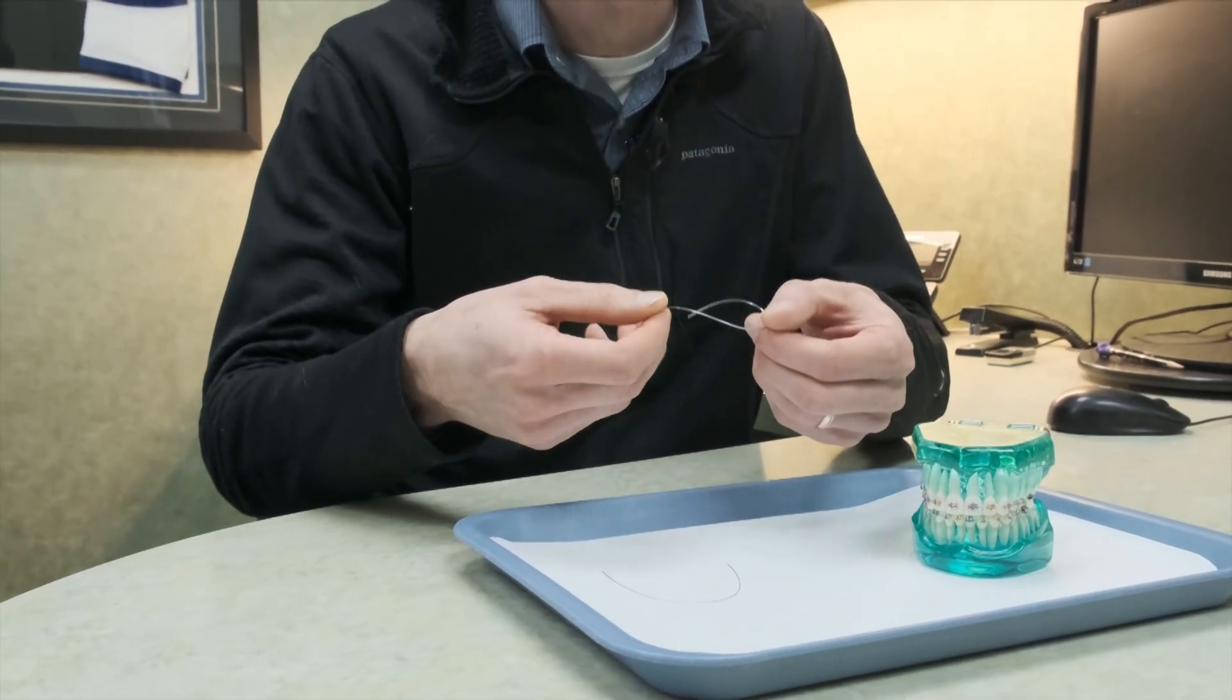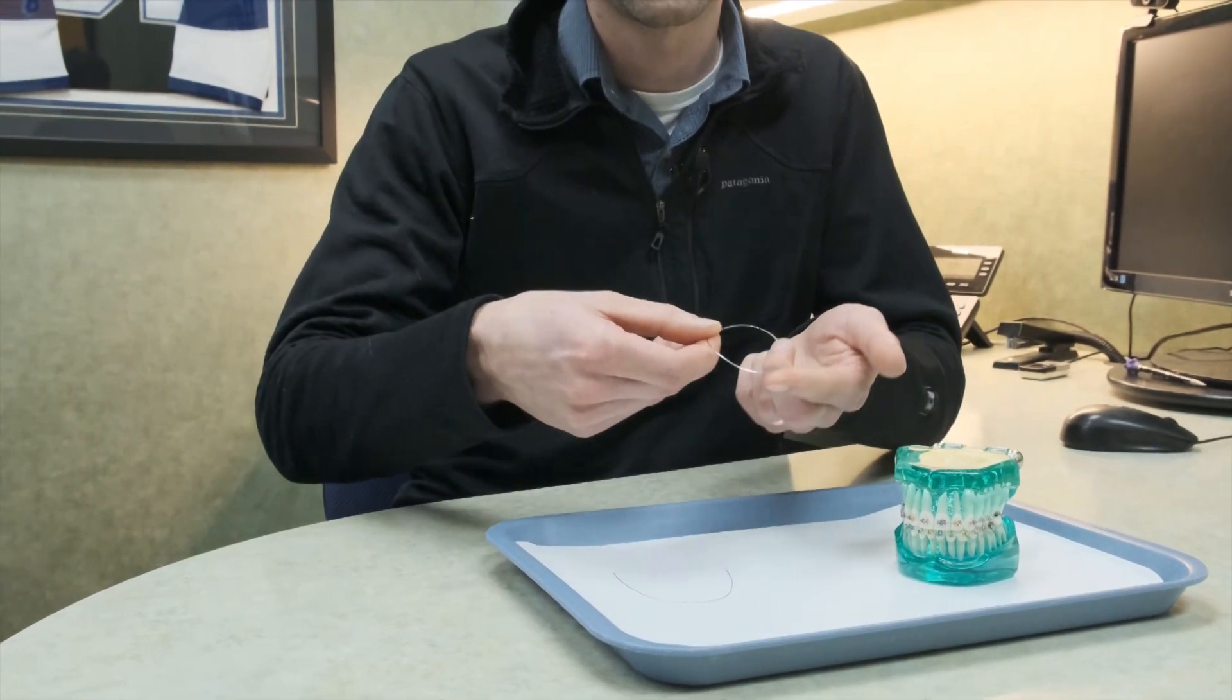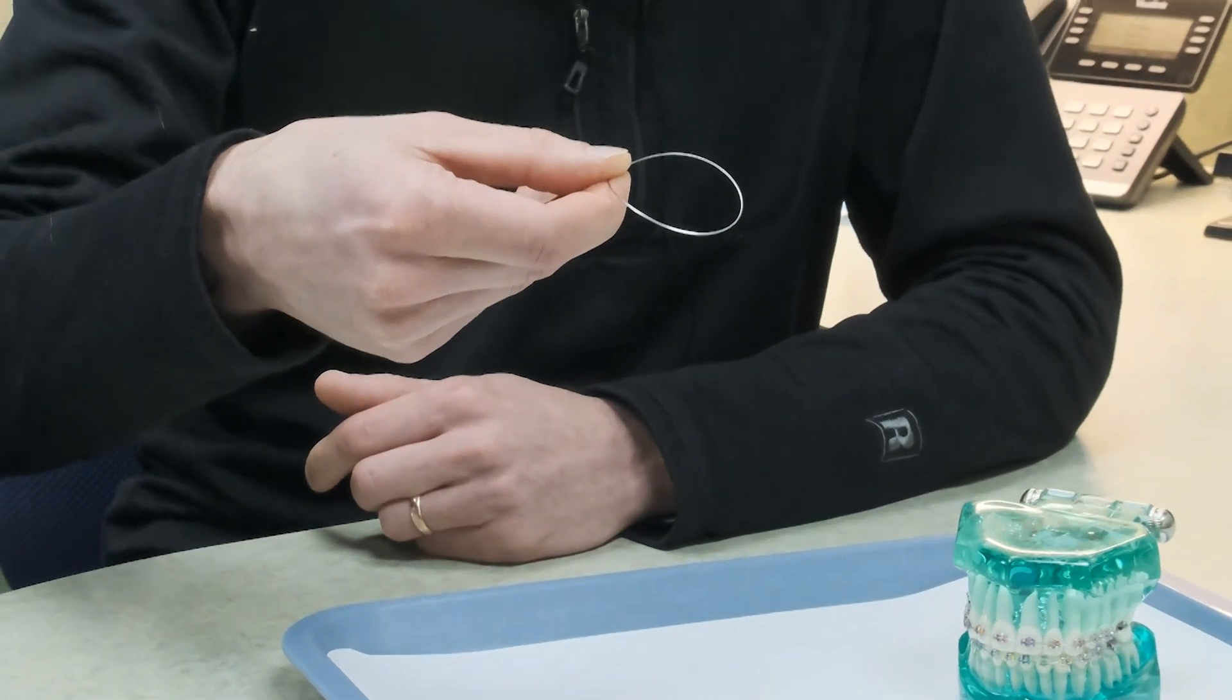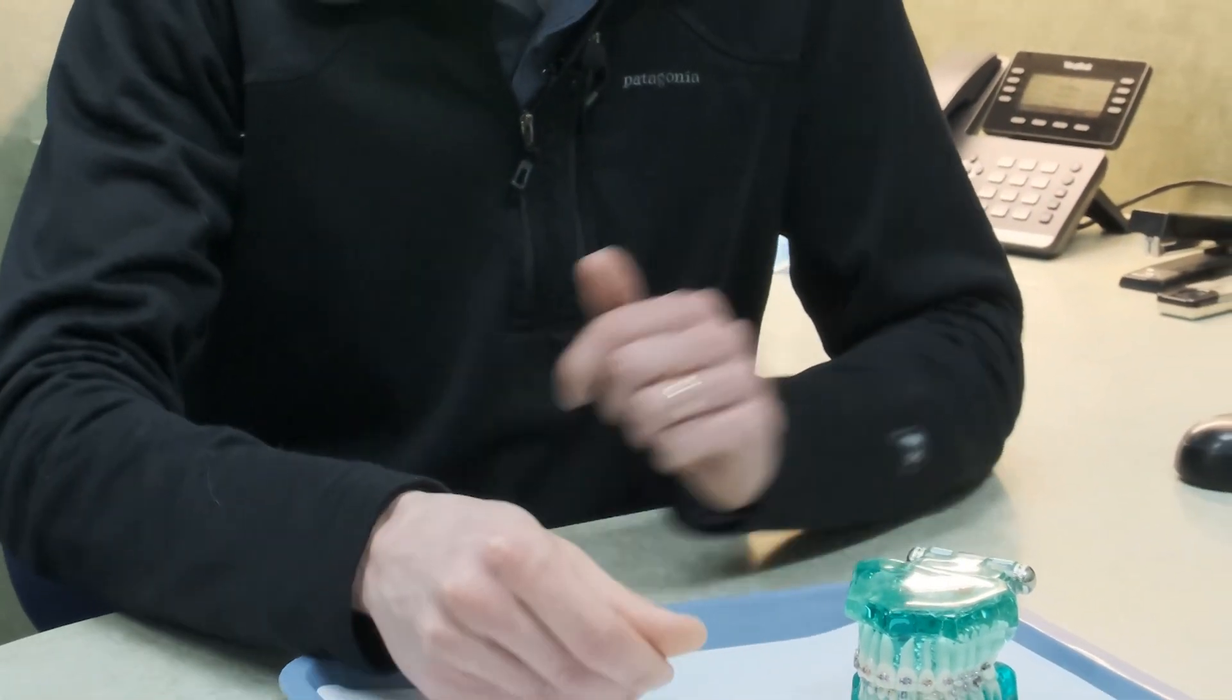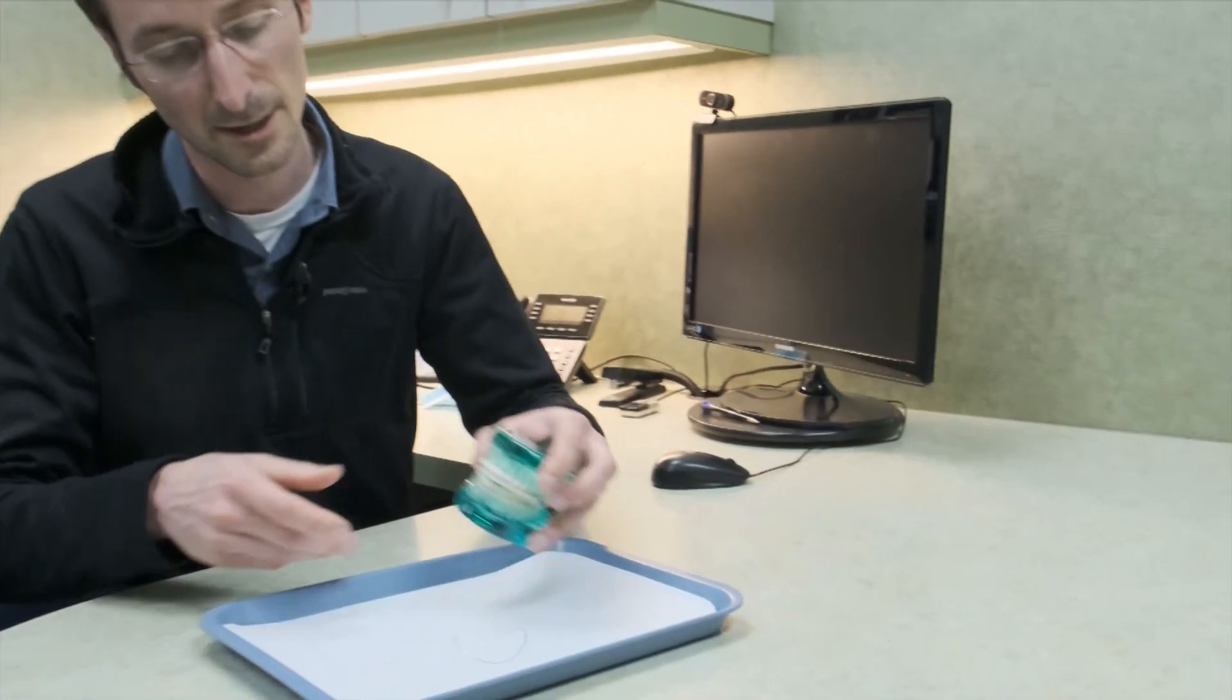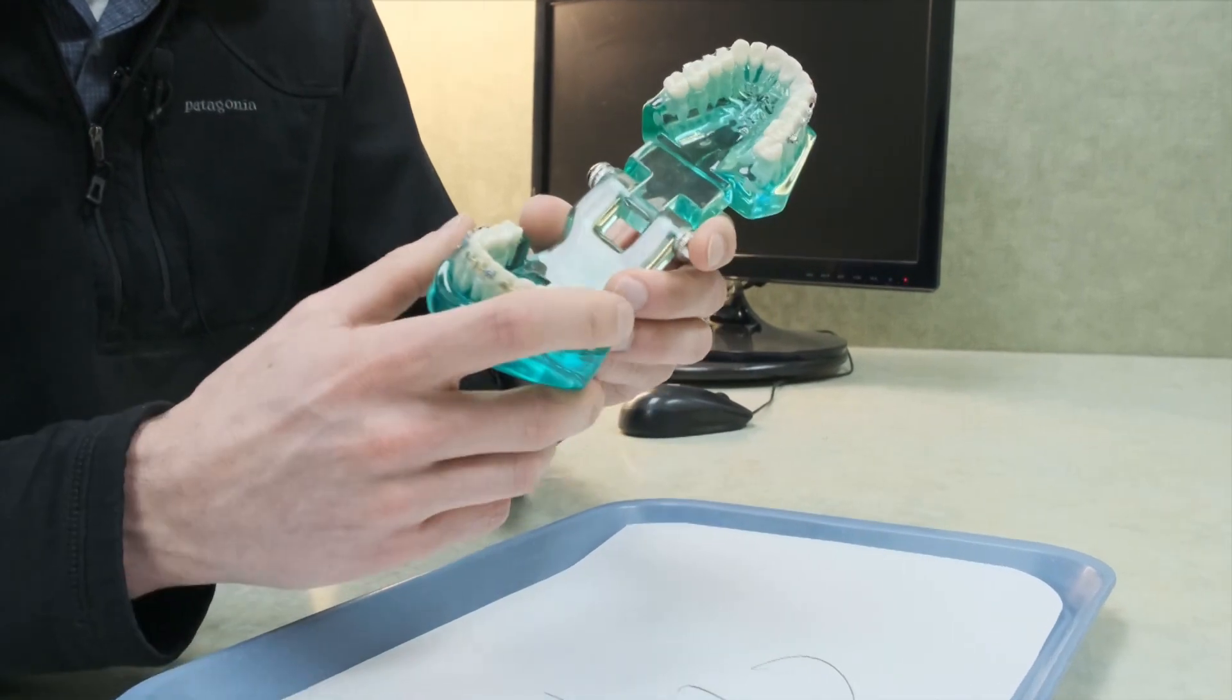What this wire does is it helps correct deep bites. When we tie it in, we're going to tie it in where it's flat, and then the wire is naturally going to want to push down on these bottom teeth. You can see it bounces around a little bit, but that reverse curve is going to help level out our bite.